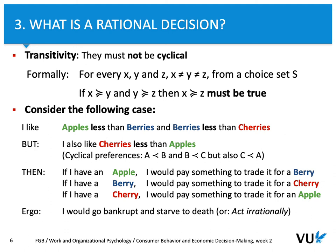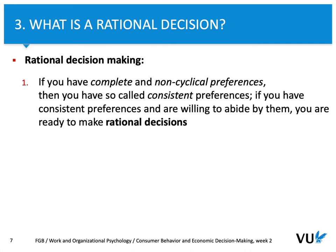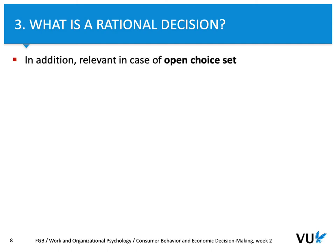I hope that based on this example you see what rational decision-making is. First of all, rational decision-making involves the following: if you have complete and non-cyclical preferences, then you have consistent preferences. Also, if you have consistent preferences and you are willing to abide by them, you are ready to make a rational decision. Nevertheless, a second element is needed — we need to have rational decisions.